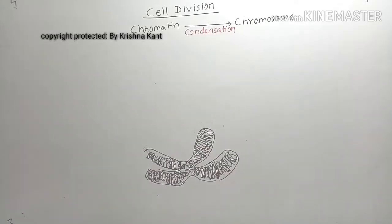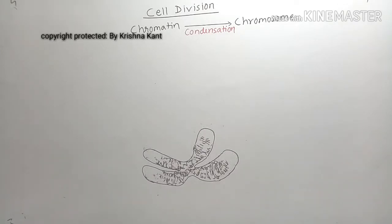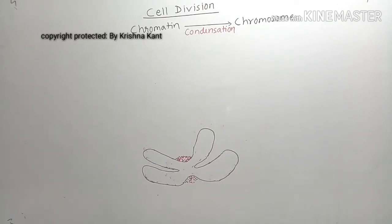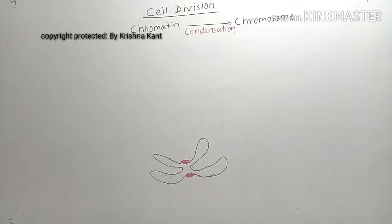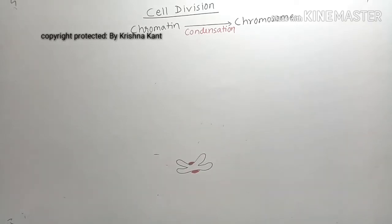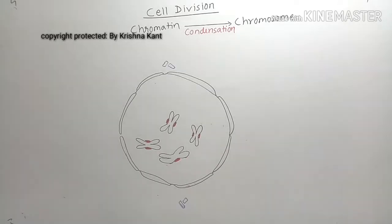This structure is now called a chromosome, with two chromatids attached at a point called the centromere, and a red-colored structure called the kinetochore protein, to which the spindle fiber will attach.